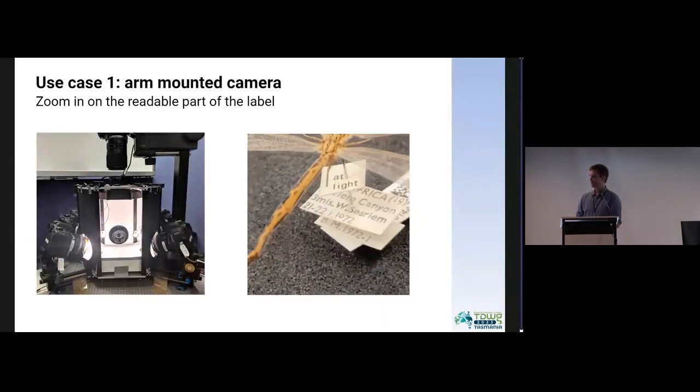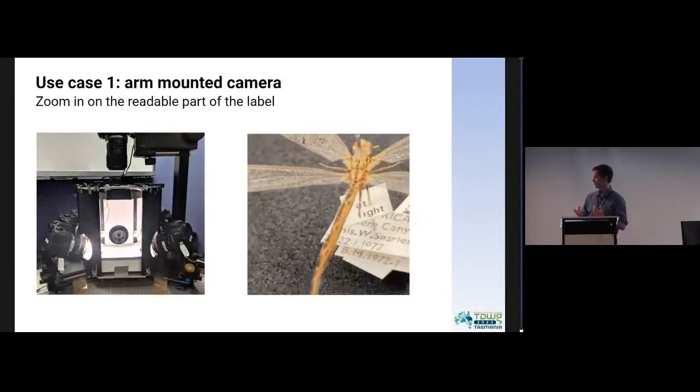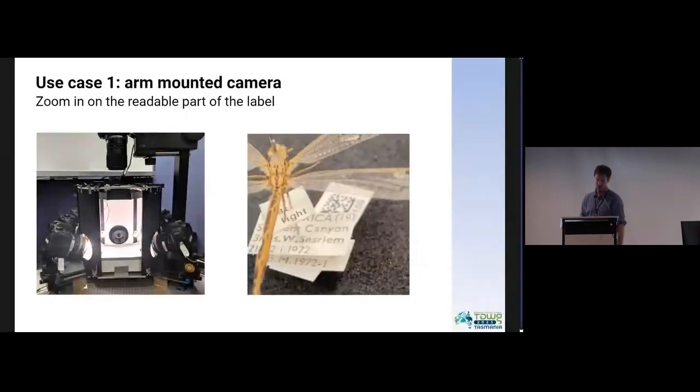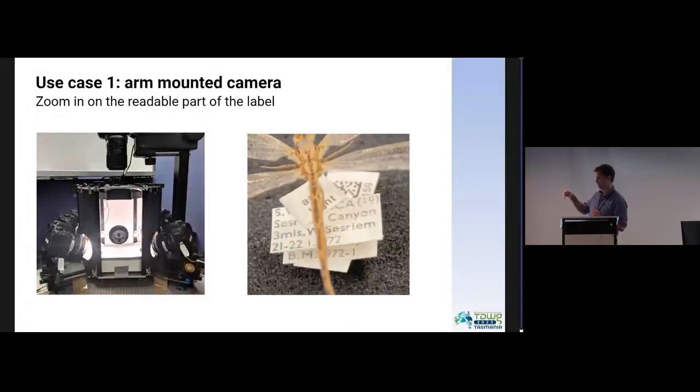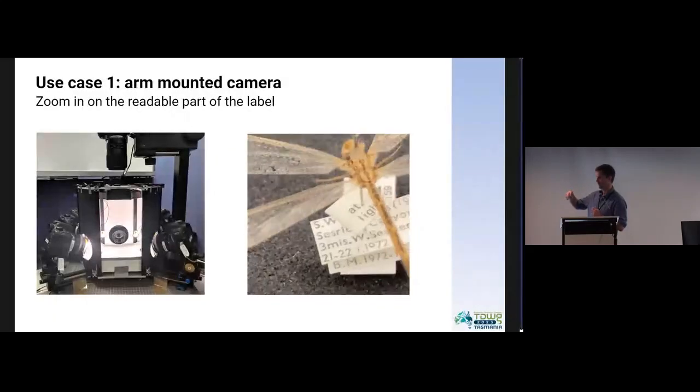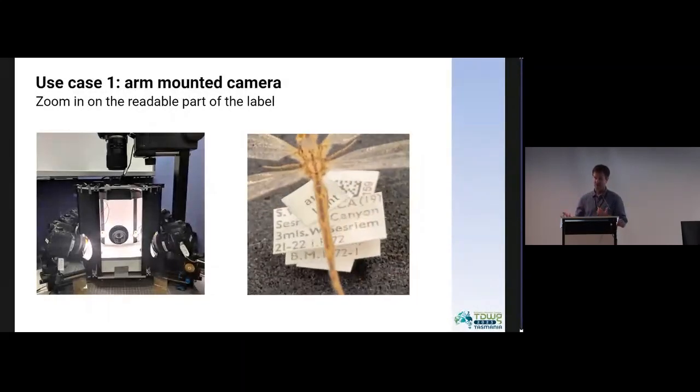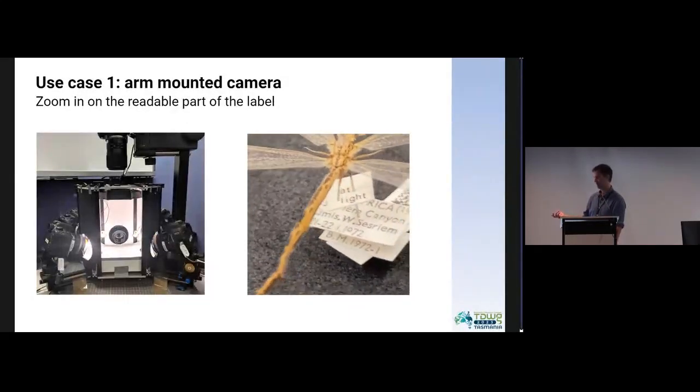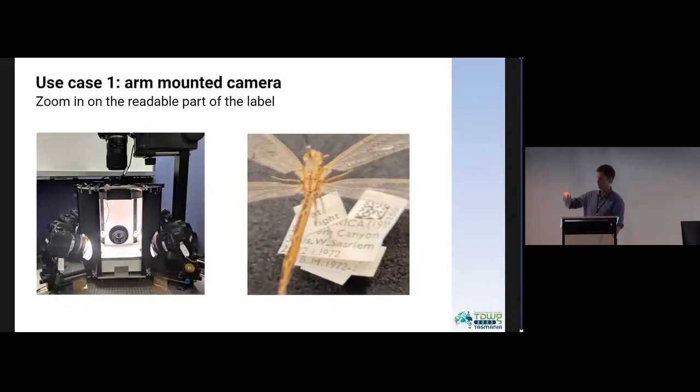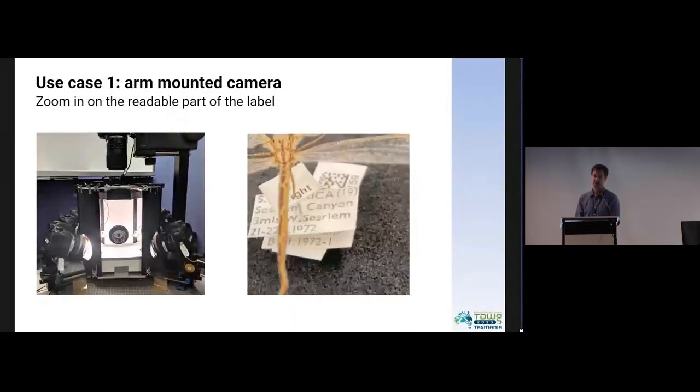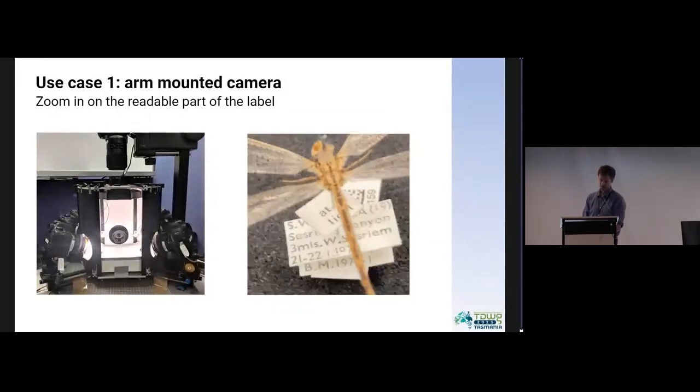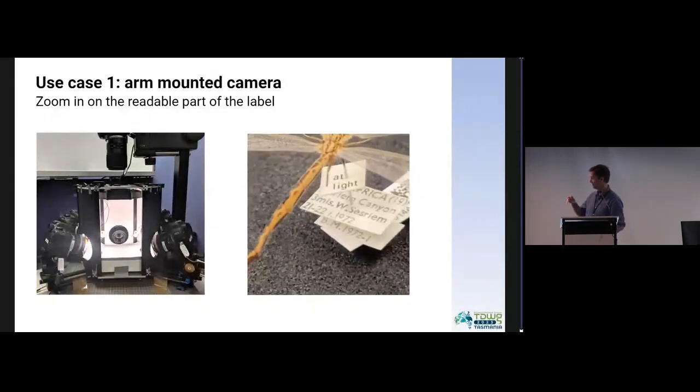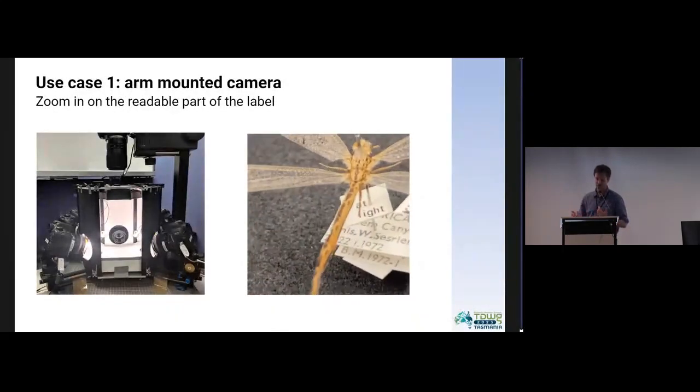But rather than trying to reconstruct the labels from those composite images, we can use our robotic arm. We can mount a camera on the arm and then zoom in on the bits of the label to make that bit readable. The robot software has automatic OCR as well, so we just have to train the model to find the best bit of the text, and then the actual built-in software will do the work.